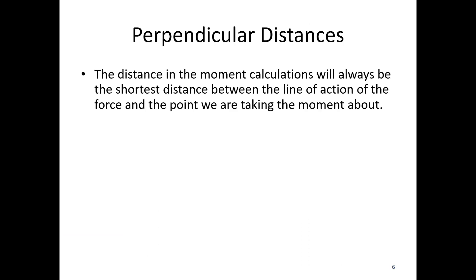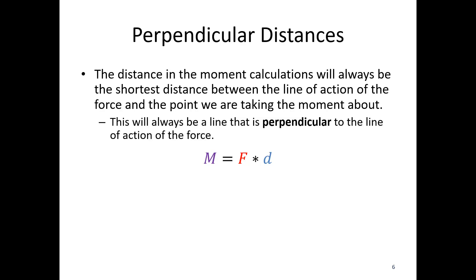Let's go back to that perpendicular distance. The distance in the moment calculation is always going to be the shortest distance between the line of action of the force and the point we're taking the moment about. Before, that was just a straight horizontal distance, but it's not always going to be that simple. This is always going to be a line that is perpendicular to the line of action of the force, because the shortest distance is going to be perpendicular to that particular line.